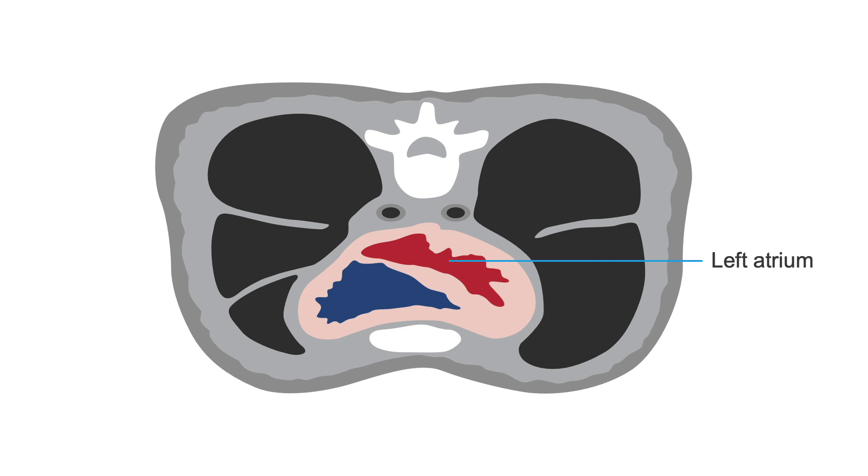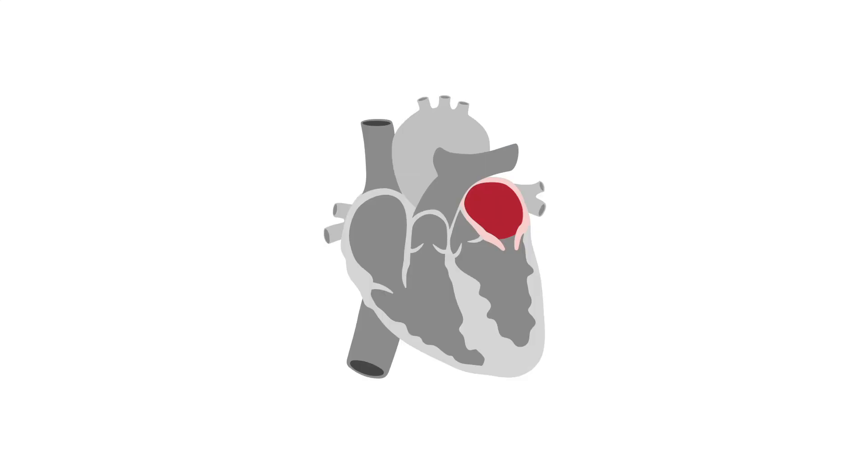Note that the anterior-posterior diameter is an insensitive parameter of left atrial dilatation. Because the left atrium is constrained between the sternum and the spine, its ability to expand in this direction is limited. In addition, left atrial remodeling involves not only chamber enlargement but also a change in shape.